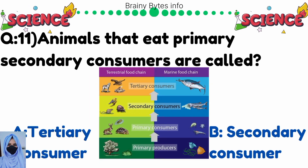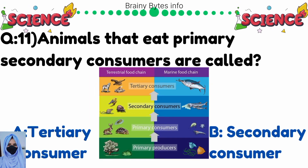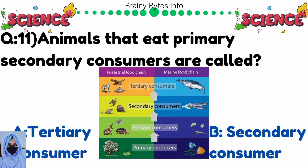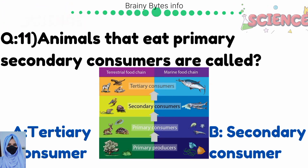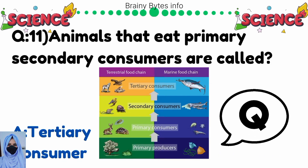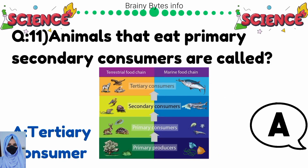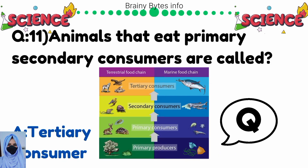Animals that eat primary and secondary consumers are called — option A: tertiary consumers, option B: secondary consumers. Correct answer is tertiary consumers.